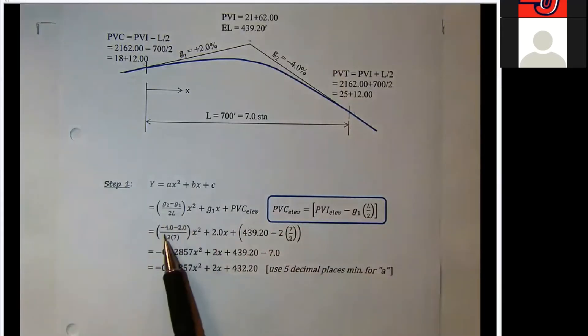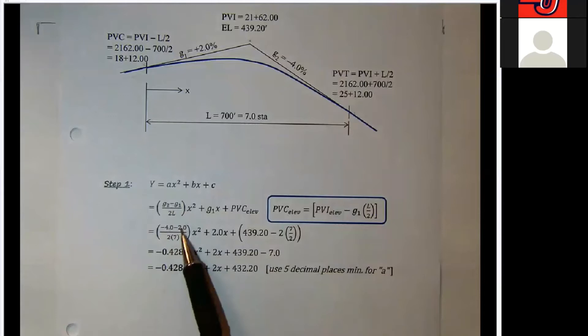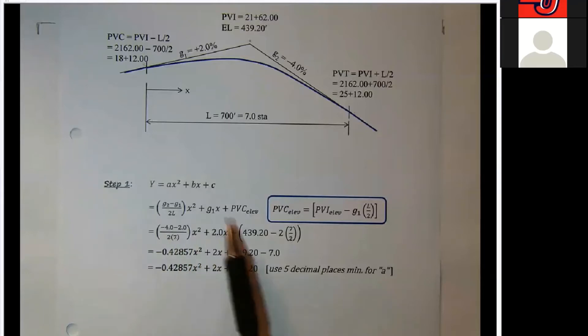Let's go ahead to the third line down, so we're just going to substitute in G2, the minus 4%, minus the G1, a positive 2%, divided by 2 times L, 700 feet in stations, times the X squared.